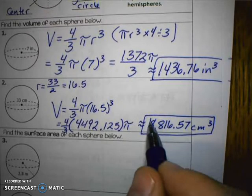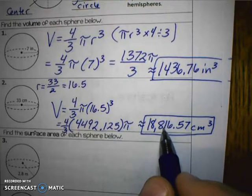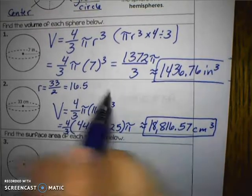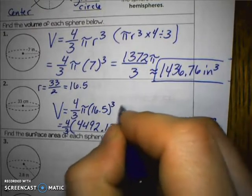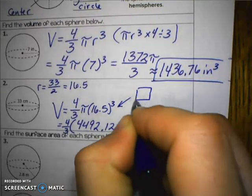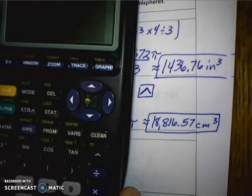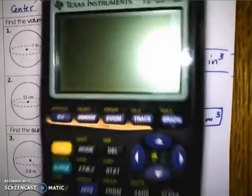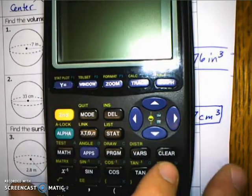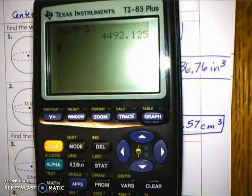If you're getting different answers, make sure you talk to me in class about what you might be doing wrong with the calculator. To do 16.5 to the third power on the calculator, use the power button — that's this button right here. So you would press 16.5, then push the power button, then press 3, and hit enter to get that number.